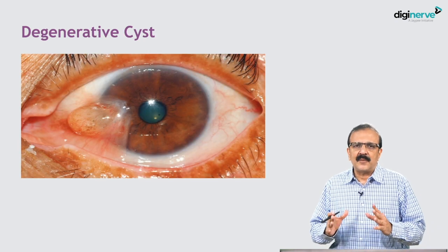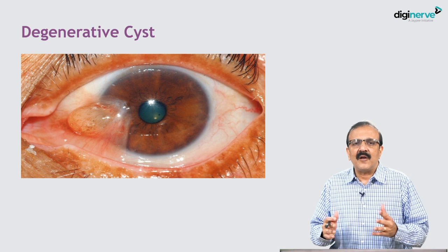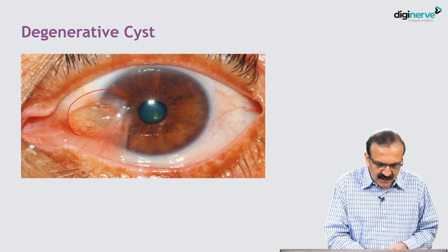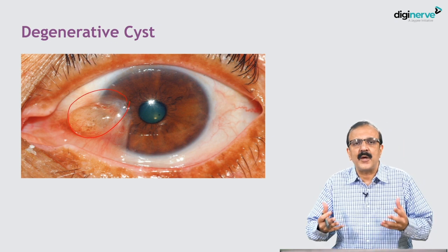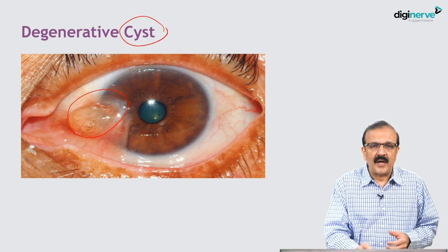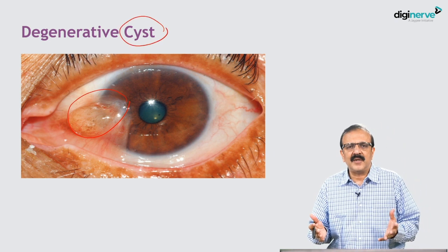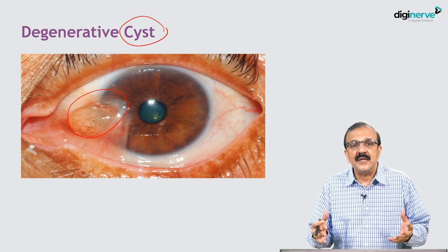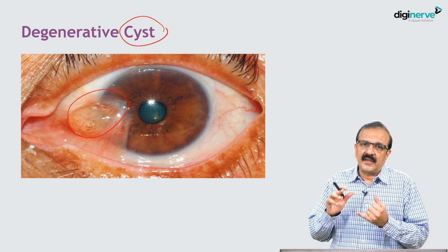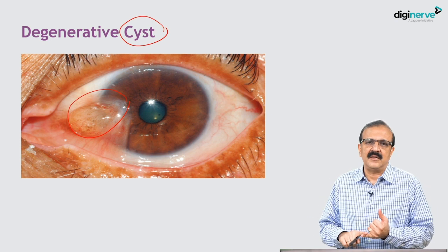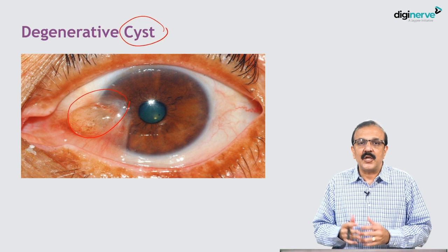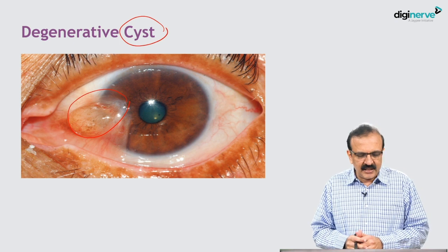We talked about the presentations of the pterygium. Certain morphological changes can happen within it — a pterygium tissue can swell and we call it a cyst, so you can have a cystic pterygium. A pterygium can remain quiet for years and then suddenly swell up. In the pathology section we noted accumulation of inflammatory cells; due to inflammation or degeneration, there can be accumulation of fluid — a degenerative cyst.